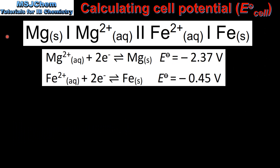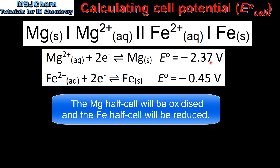Let's look at one more example. Here we have the shorthand notation for a Voltaic cell composed of a Magnesium half cell and an Iron half cell. And here we have the values for the standard reduction potentials as found in the data booklet. From these values we can see that the Magnesium half cell has the more negative value for the reduction potential and the Iron half cell has the more positive value for the reduction potential.